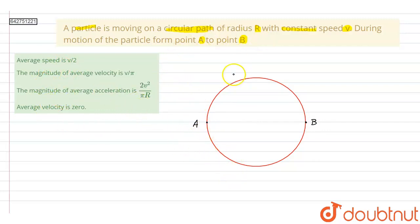So let us say that the particle is moving anticlockwise from point A to point B. And we have to find average speed of this particle. The radius is given as R, so this distance will be equal to R.